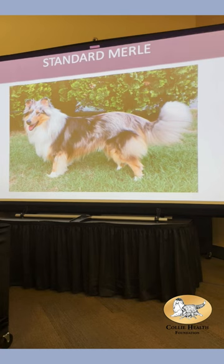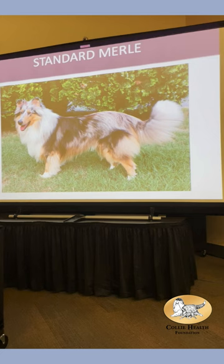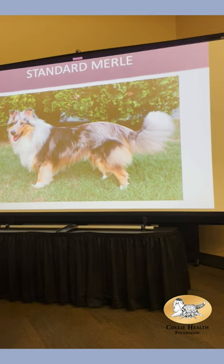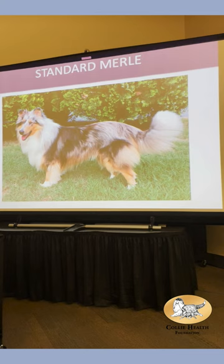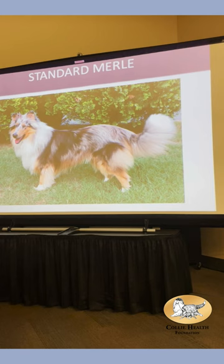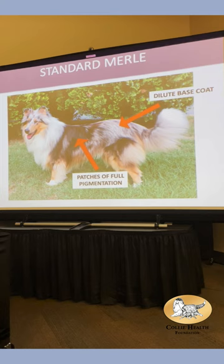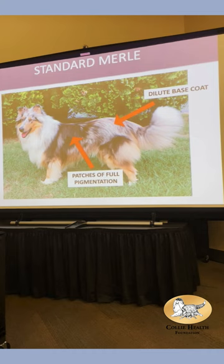This is my merle collie, Dr. Watson — a standard merle. When you think about merle, think about it as two phenotypes controlled by two mechanisms. One phenotype is a dilute base coat. The second phenotype is patches of full pigmentation. They are two separate things caused by independent mechanisms. They all come back to the same gene, but they work differently.